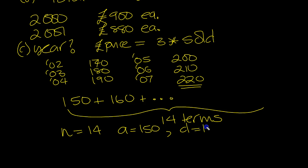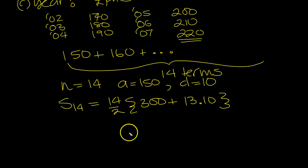So S14 is equal to n over 2, bracket, 2a. 2 times 150 is 300, plus n minus 1, which is 13, times 10.